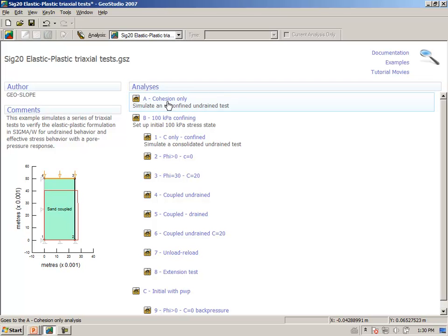One is totally undrained. Another one is with confining stress, where we only have cohesion, and then purely frictional, friction with some cohesion, coupled purely undrained, coupled drained, and so forth. We're just going to look briefly at the one case, number four.